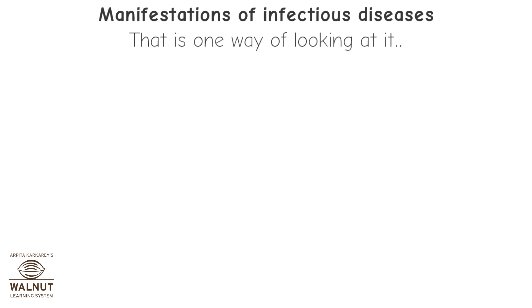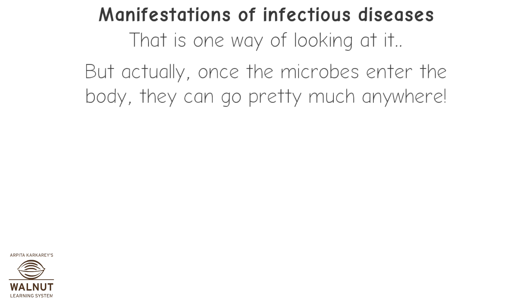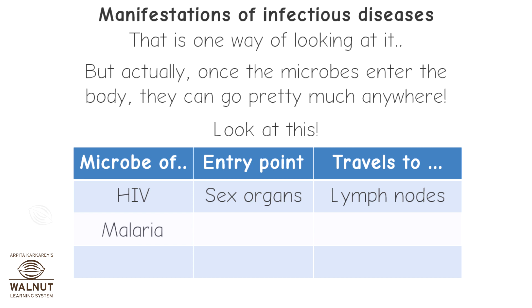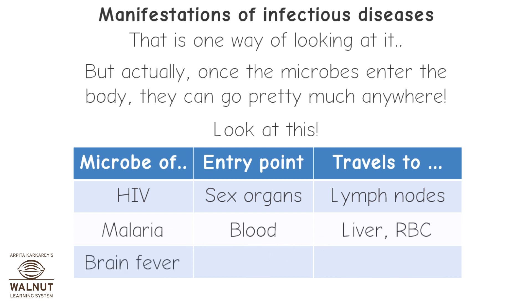However, once inside the body, microbes can travel pretty much anywhere. The microbe of HIV, which enters through the sex organs, travels to the lymph nodes. The microbe of malaria, which enters the blood, goes to the liver and red blood cells. The microbe of brain fever enters the blood and travels to the brain.